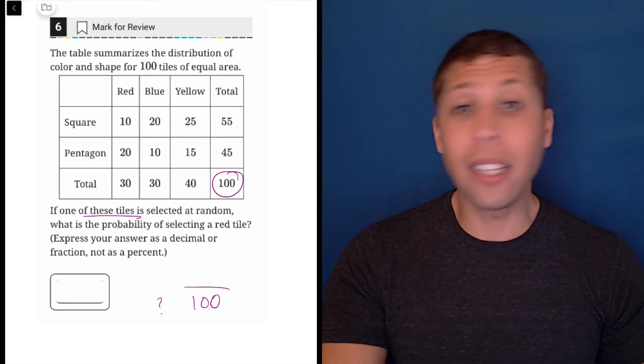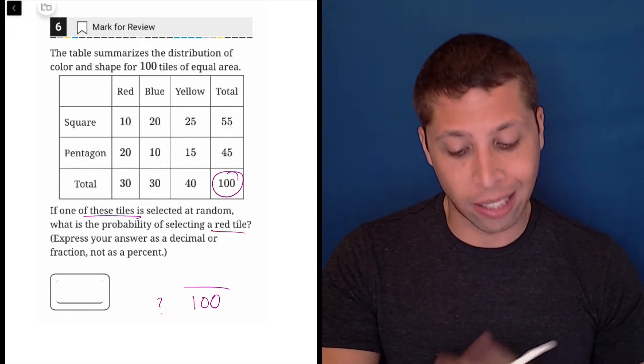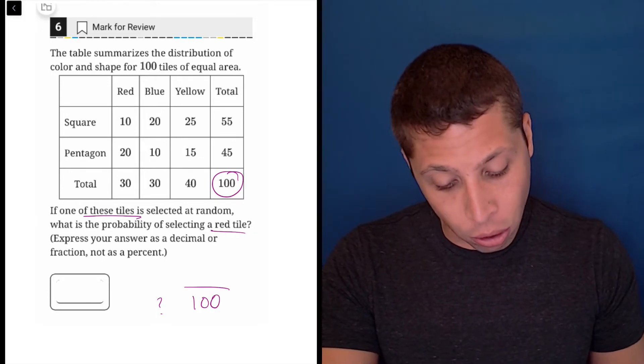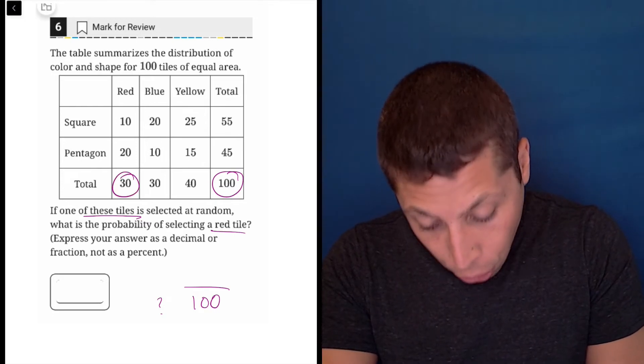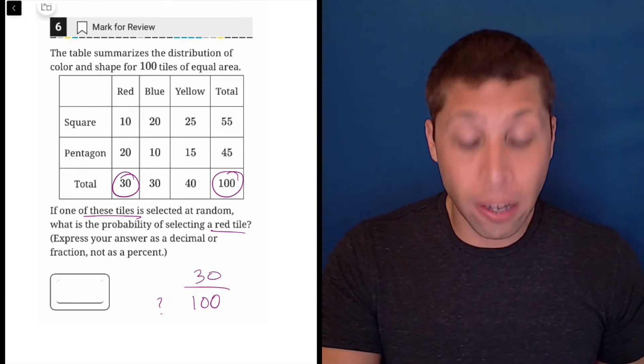So with that said, now we can work on the easier part, which is the top. They want to know what is the probability of selecting a red tile. So there are a total of 30 red tiles. Maybe this is where the twist is. So that's 30 out of 100.